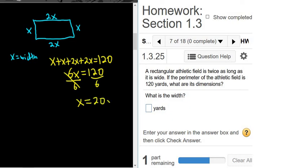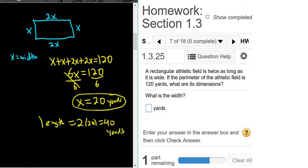So 20 yards are the units. x is 20 yards, that's the width. To find the length, you multiply by 2, because it's 2x. So 2 times 20 equals 40 yards.